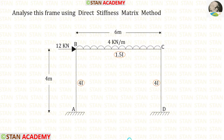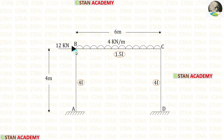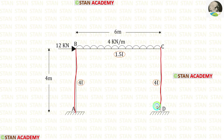Hello everyone. Today we are going to analyze this frame using the direct stiffness matrix method. Before analyzing, let us see the frame one time. In this frame, we have the columns AB and CD and the beam BC.